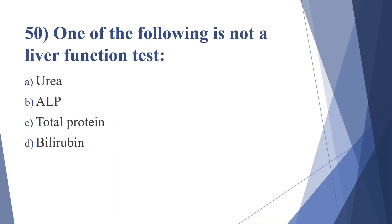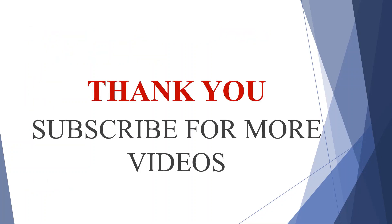The last question: one of the following is not a liver function test — option A: urea, option B: ALP, option C: total protein, option D: bilirubin. Answer is option A, urea.